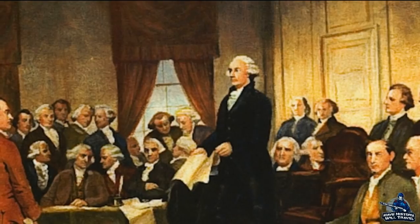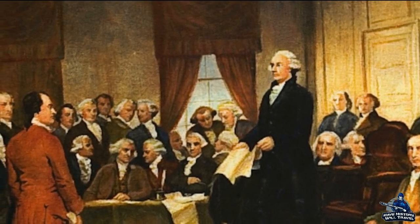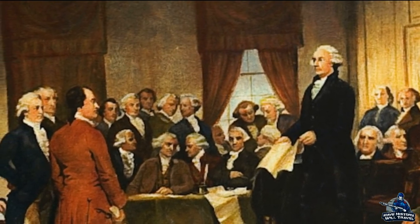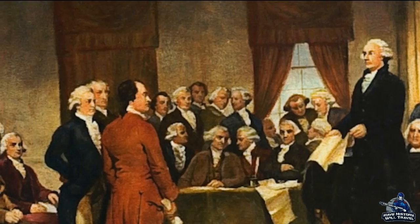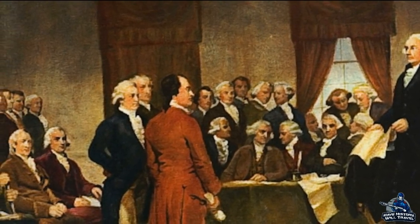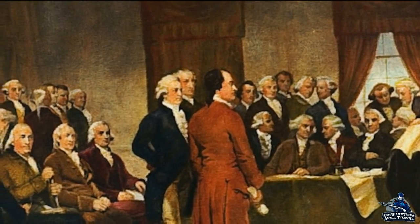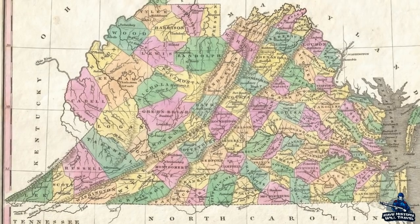Like many debates in the first half of the 19th century, it devolved around slavery and how the enslaved should be counted toward representation, just like the Constitutional Convention in Philadelphia in 1787, when delegates debated whether the slave population would count toward representation in Congress. The Philadelphia Convention's eventual compromise stated that three-fifths of the state's slave population would help determine how many representatives each state would have. In Virginia, its delegates debated how representation would be allocated for their bicameral legislature.